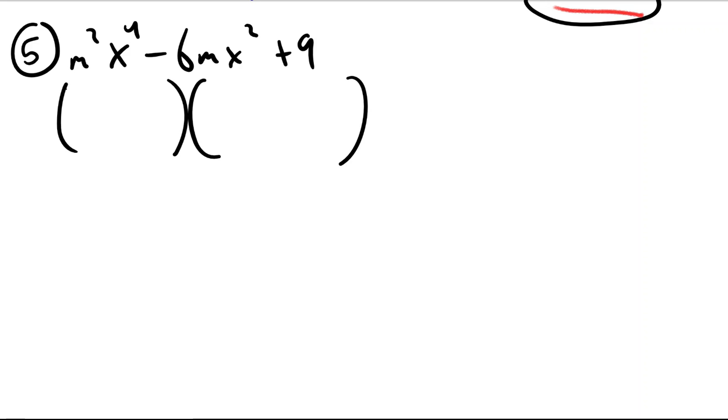So make two sets of binomials. Think about what the first part of foil has to be to give you this. Think about what the last part of foil has to be to give you this. And then check to make sure that the outer part of your foil combined with your inner part of your foil gives you minus 6mx squared.